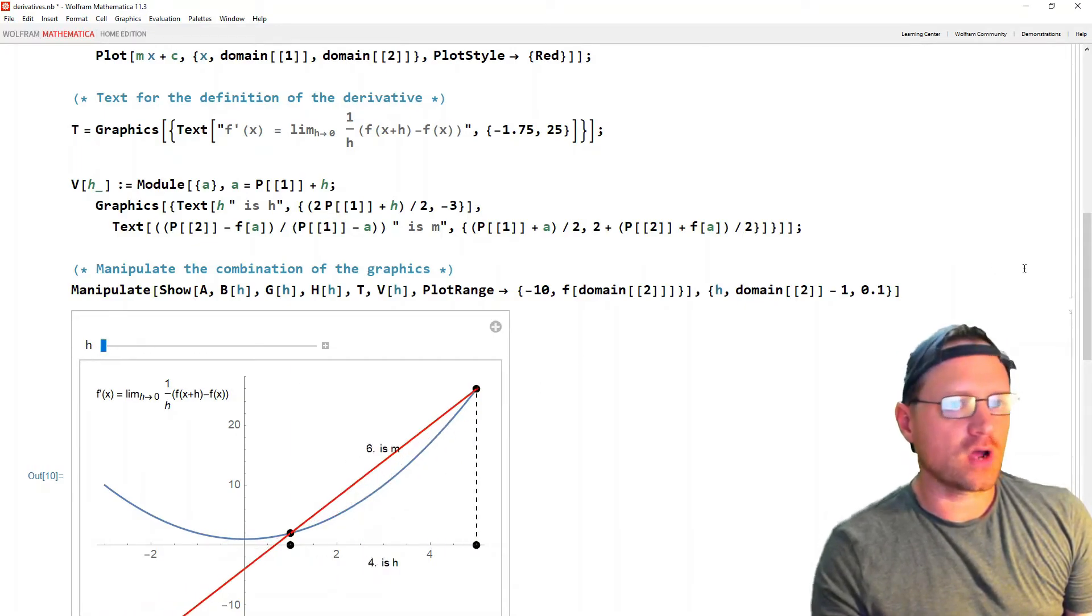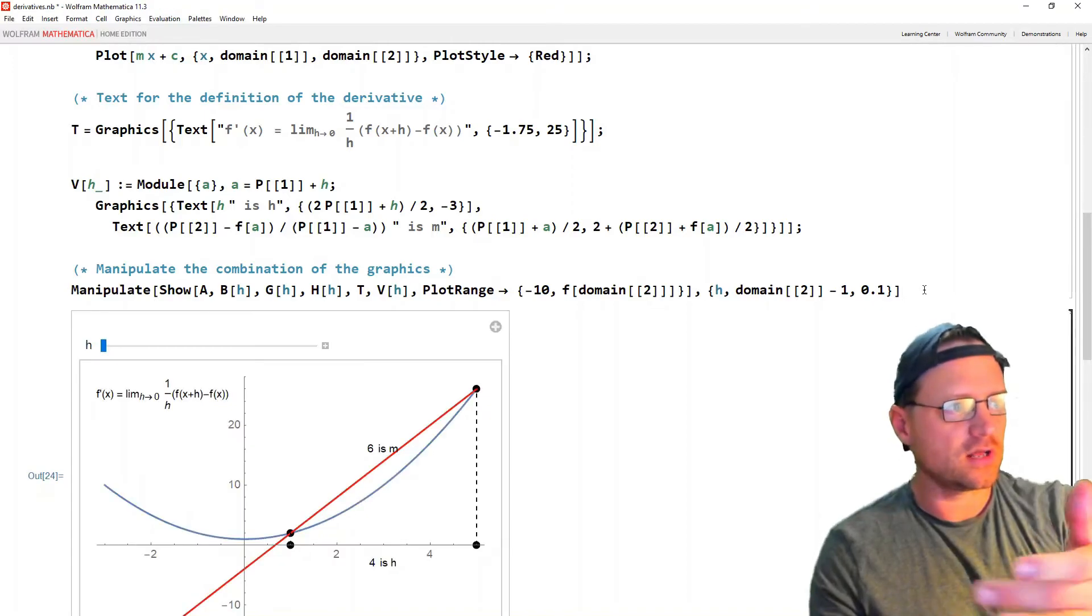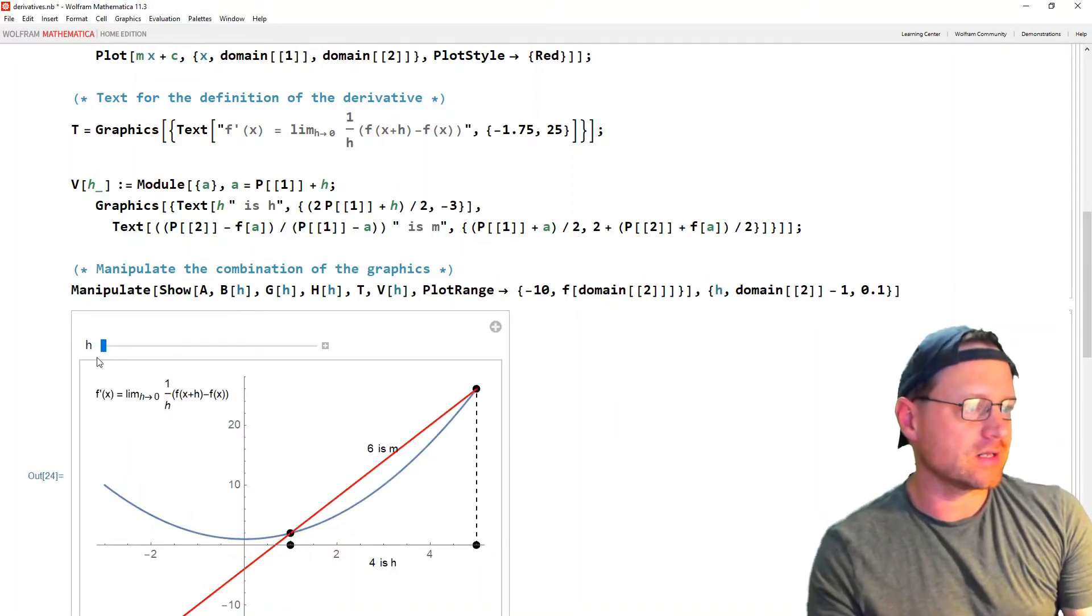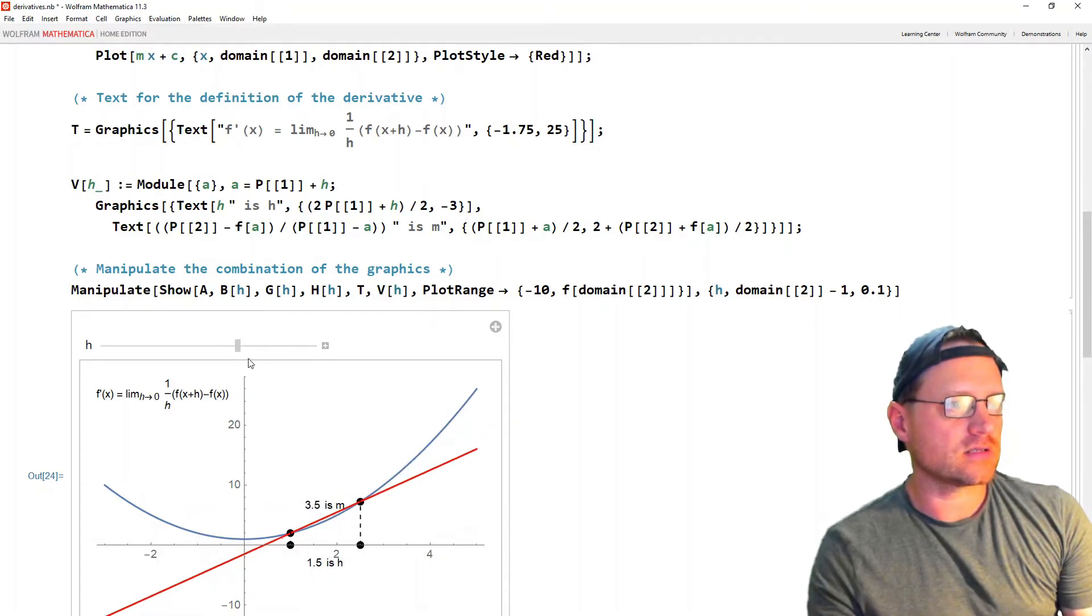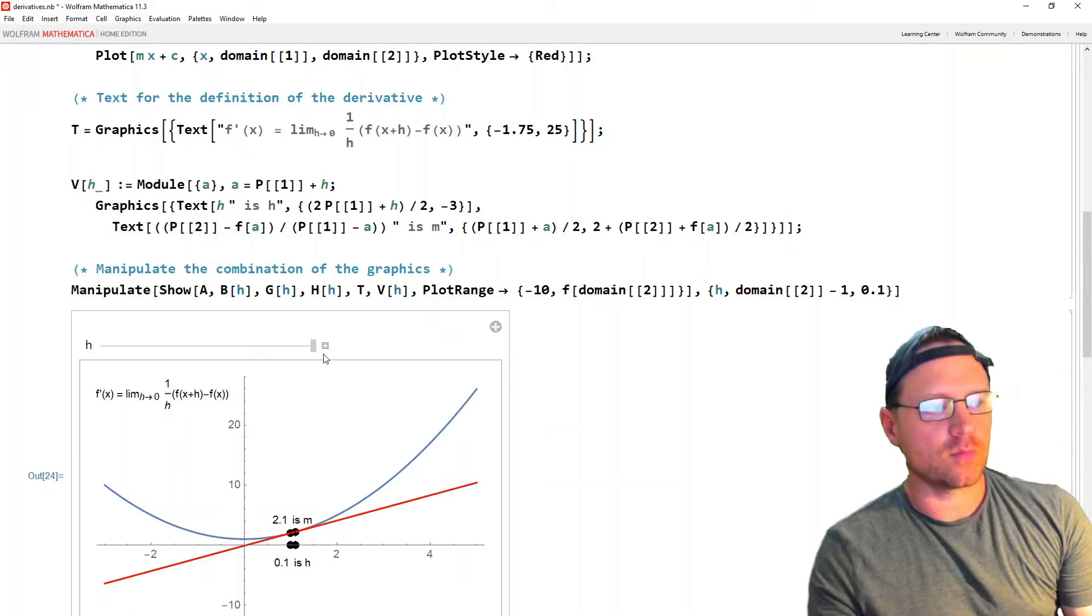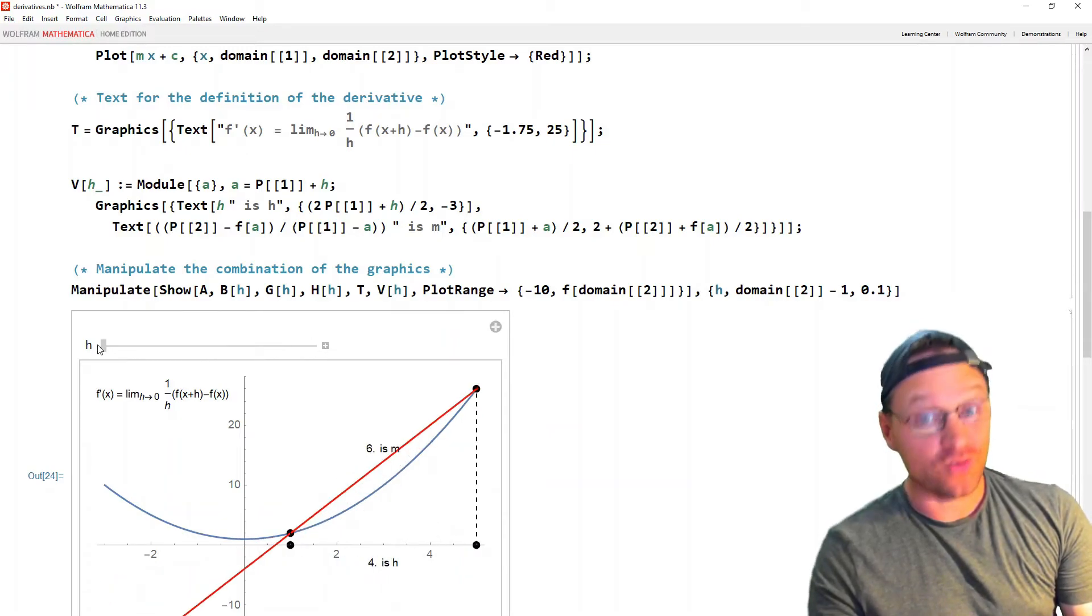All right, and then finally we can run it. So I'll press shift and enter, and that's just created it again. And then we can see what happens as that decreases. We see this secant line approaching the tangent line. Great.